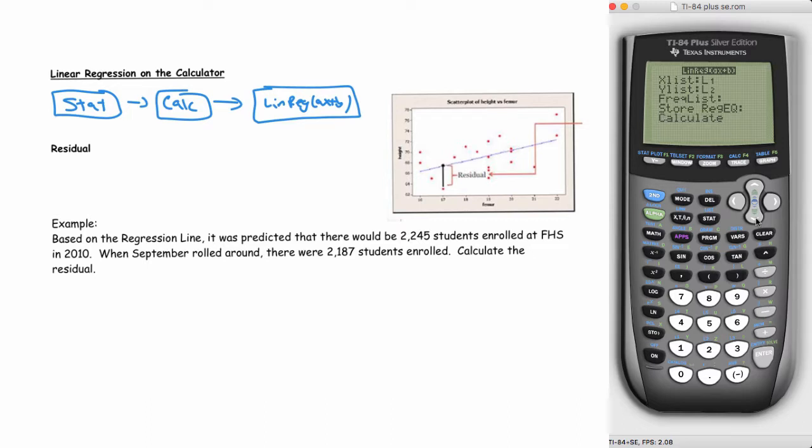Use ax plus b, press enter. Make sure L1 is your x list and L2 is your y list. We get our equation y equals ax plus b, where a is 2.349 and b is 7.82. We get r squared and the r value below, which is 0.99. You would write your linear equation as y-hat equals 2.349x plus 7.814.